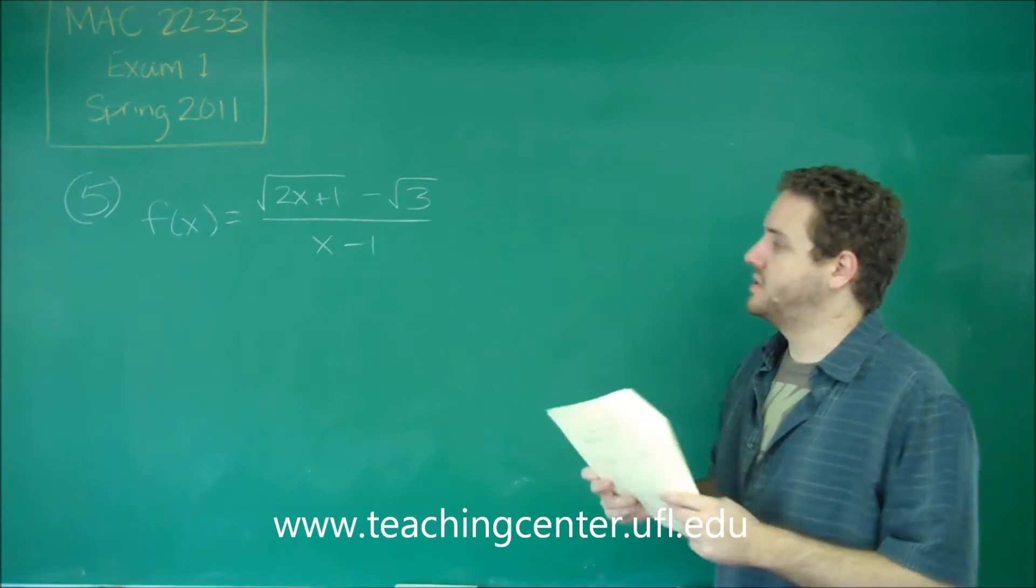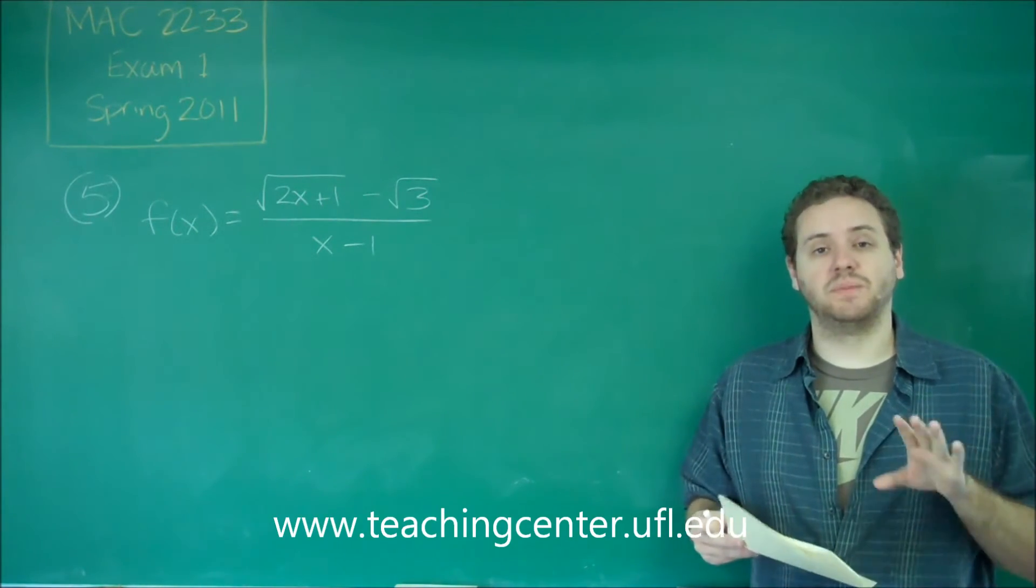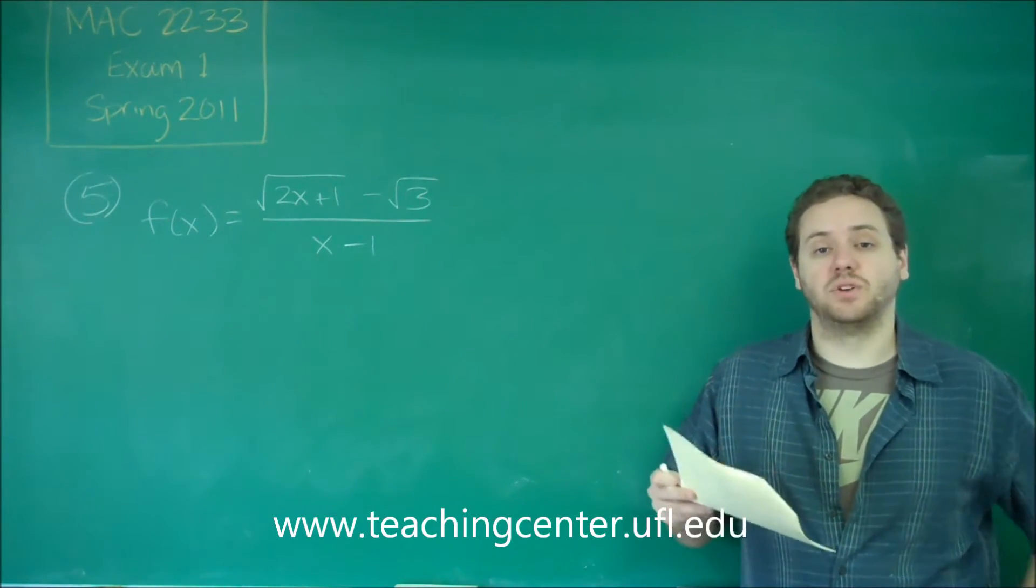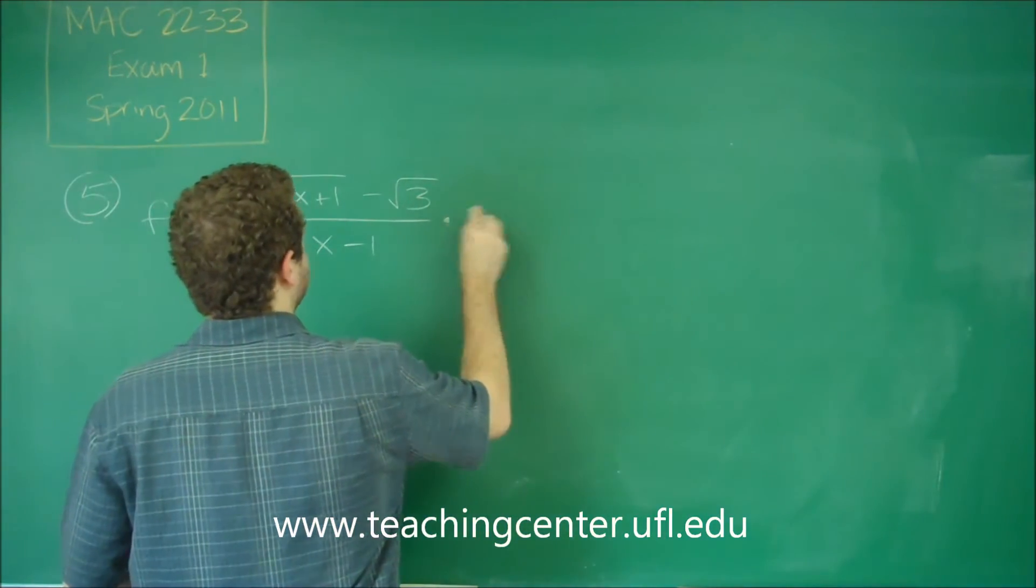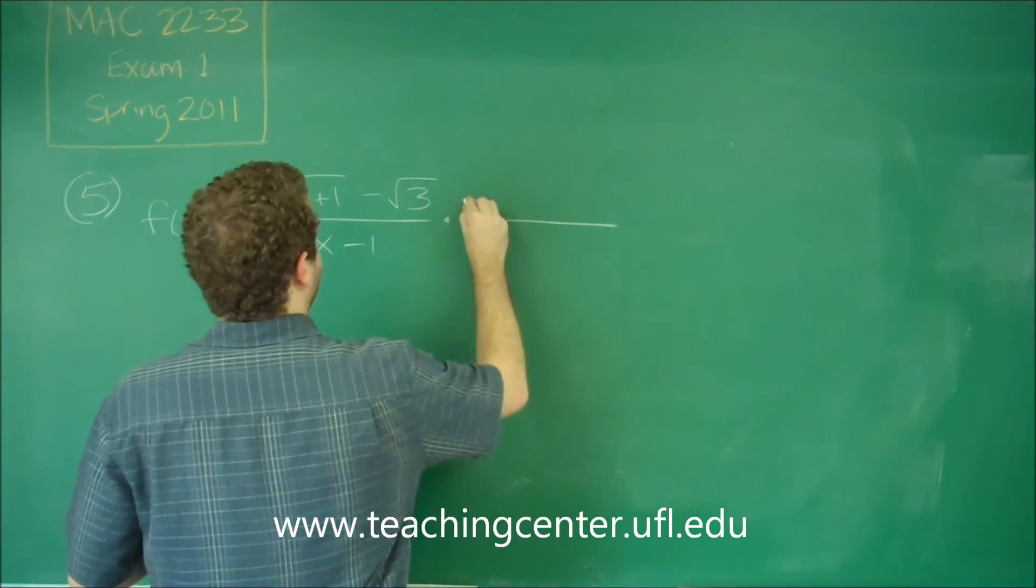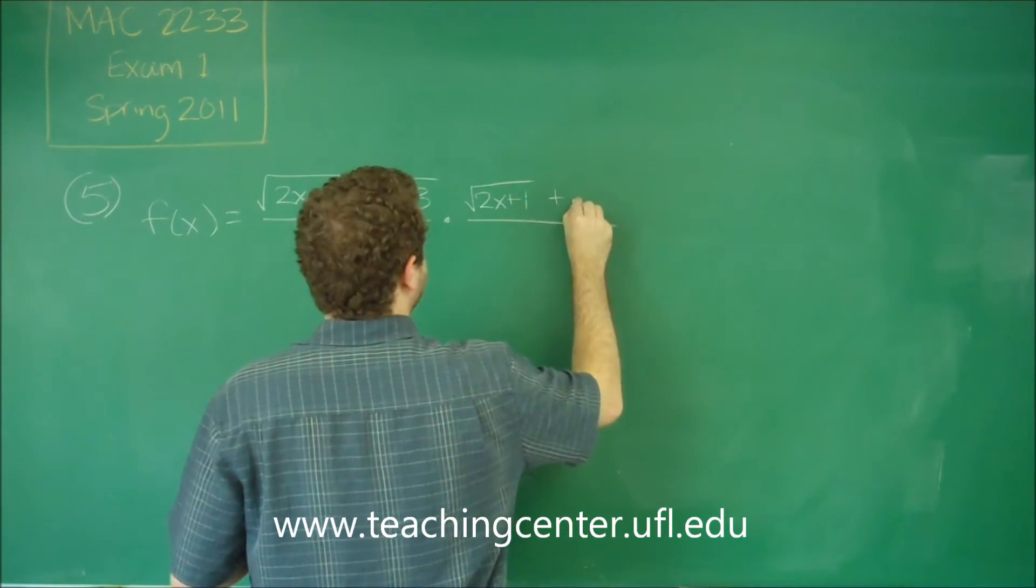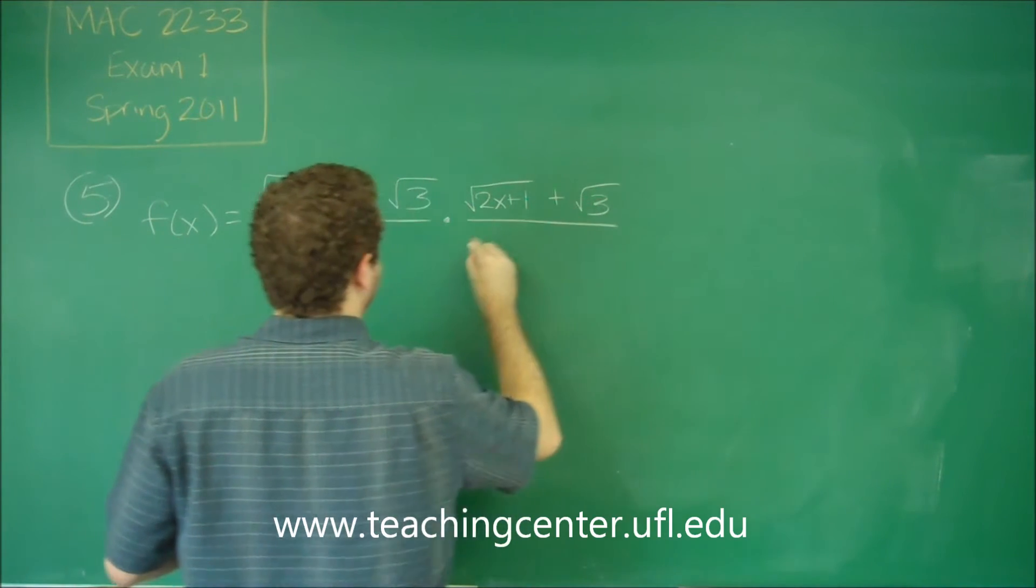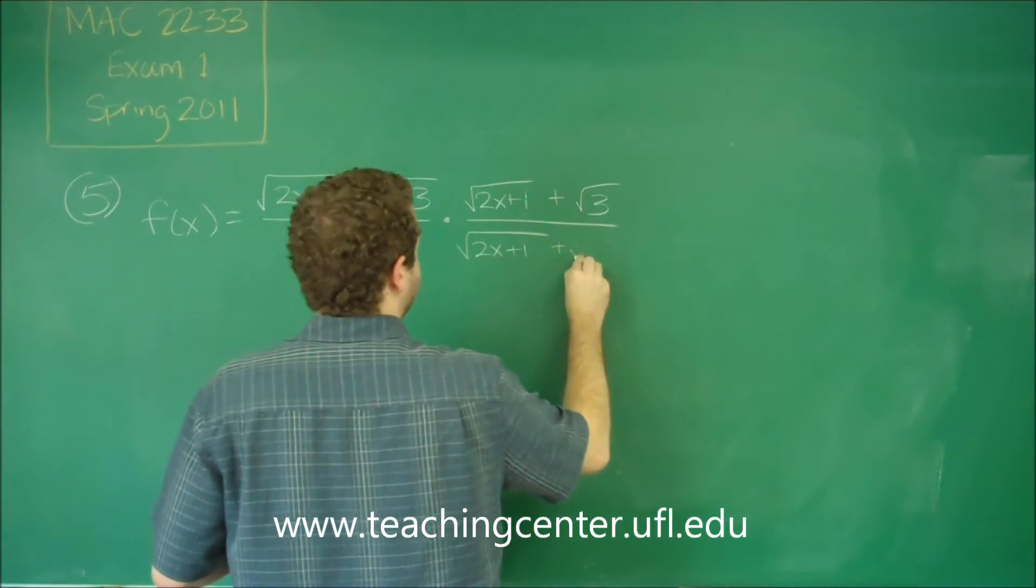As soon as you see square roots that are added and subtracted in a rational function like this, you should immediately think that you need to do the conjugate. So that means multiply the top and bottom by the conjugate of that. Remember that the conjugate is the same two terms separated by a different middle sign. So we need to do that to the bottom and top.